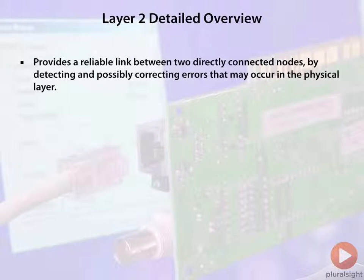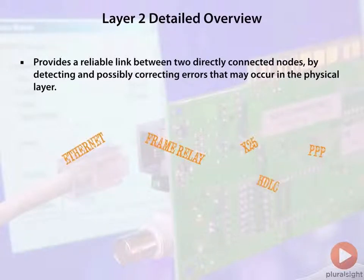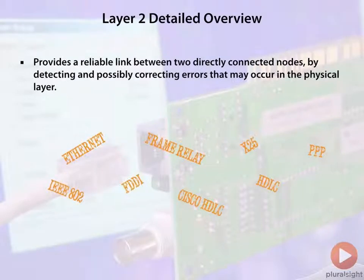Layer 2 of the OSI model provides a reliable link between directly connected nodes by detecting and maybe even correcting errors that happen at the physical layer. The protocols we see at Layer 2 are going to vary. We might see Frame Relay, the Point-to-Point Protocol, Ethernet, HDLC, or IEEE's 802 protocols.